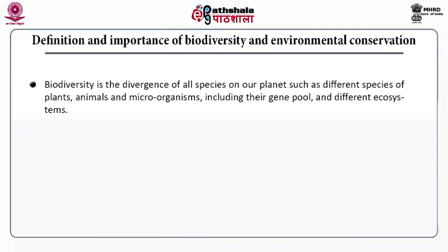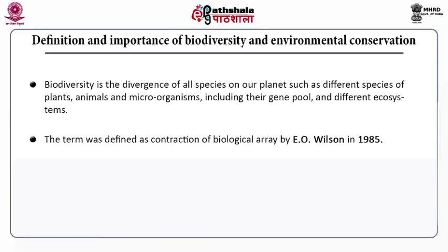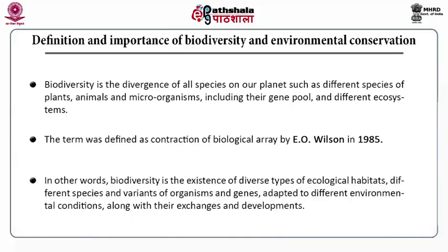Biodiversity is the divergence of all species on our planet, such as different species of plants, animals and microorganisms, including their gene pool — that is genotype — and different ecosystems. The term was defined as a contraction of biological diversity by E.O. Wilson in 1985. In other words, we can say that biodiversity is the existence of diverse types of ecological habitats, different species and variants of organisms and genes adapted to different environmental conditions, along with their gene exchange and developments.